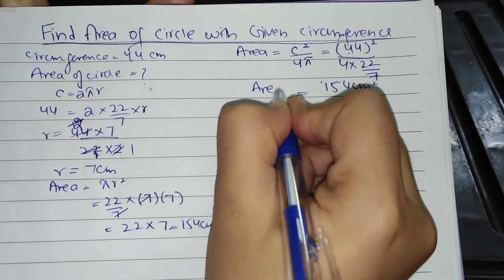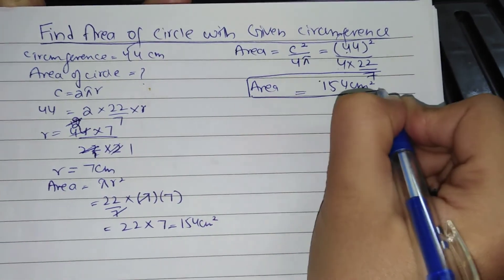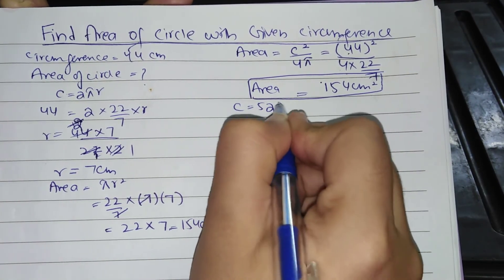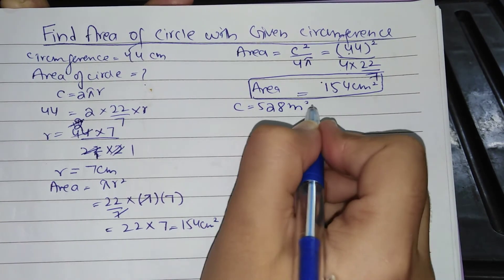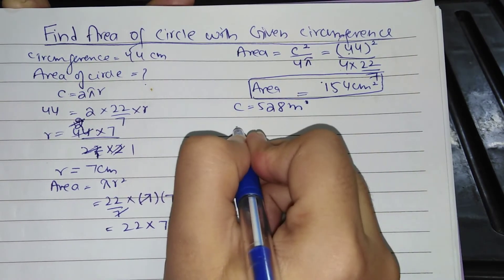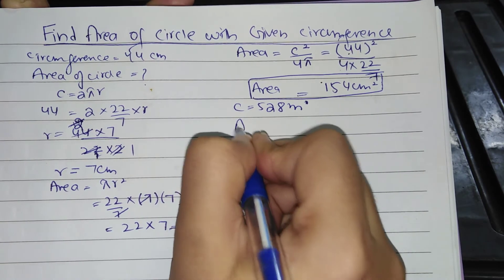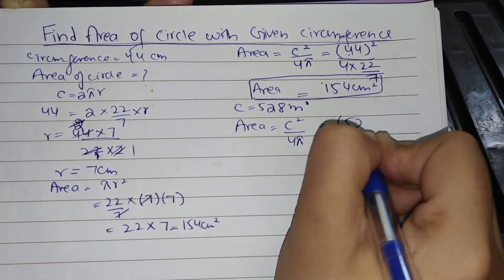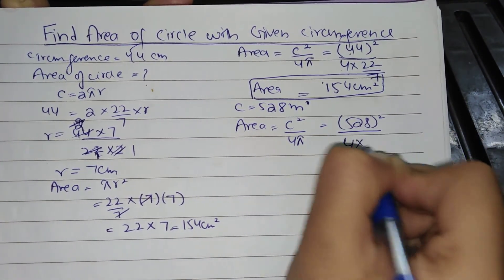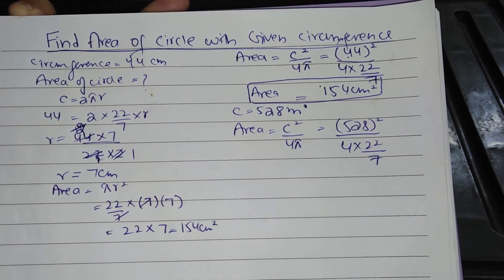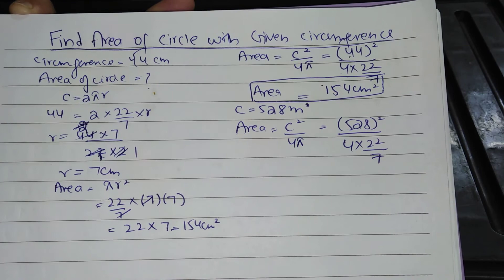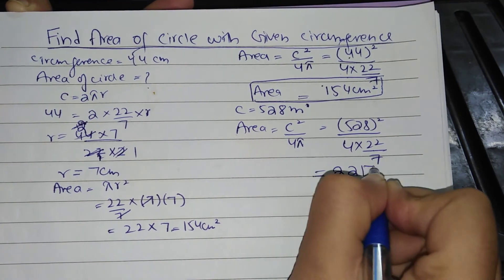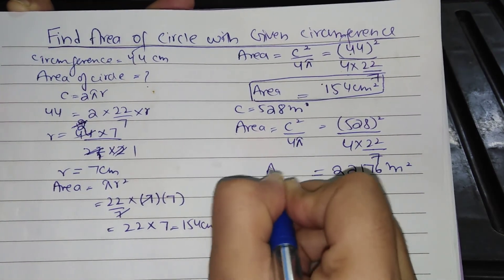Let's take another example. If C equal to 528 meters, find area. So area will be C² by 4π, which is equal to 528 square by 4 into 22 by 7. As we discussed in the previous lecture, how to square the three-digit number, link is mentioned in the description. So by solving this, result will be 22,176 meter square.